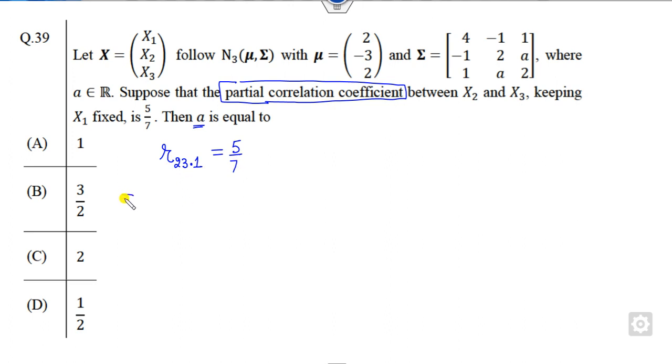Now if you open this formula, what is the formula? If I say rho, what is rho? Rho is the correlation coefficient. How can you open that? It is a23 minus 21 times 31 divided by square root of 1 minus 21 squared and 1 minus 31 squared.